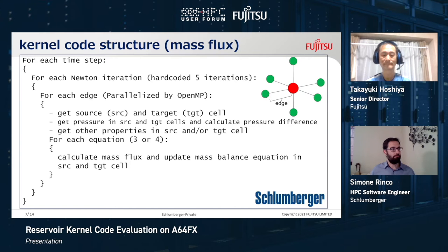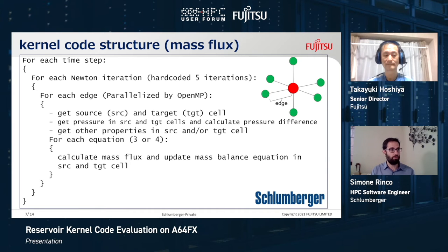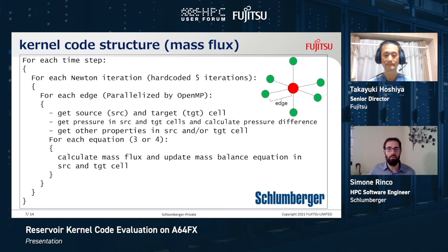Our sample code reflects what a real simulator is doing. Given the solution at a given time step we need to calculate the solution of the next time step. We have an outer loop for every single time step, and because we have to solve nonlinear equations we have another loop which is essentially the Newton iterations — in our sample code we have fixed this at five iterations. To approximate the flux, for example, we need to iterate over each connection in the reservoir. We can think of the cells and connections as nodes and edges in a graph. To calculate the flux we need the properties of the fluid and rock at both sides — the source and target cells — and in particular we are interested in the pressure difference, which is the driving force of the system.